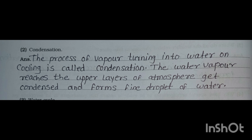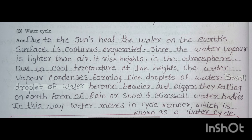Water cycle: due to the sun's heat, the water on the earth's surface is continuously evaporated. Since water vapor is lighter than air, it rises into the atmosphere. Due to cool temperatures at height, the water vapor condenses, forming fine droplets of water. Small droplets become heavier and bigger, falling on earth as rain or snow and mixing into all water bodies. In this way, water moves in a cyclic manner, which is known as the water cycle.